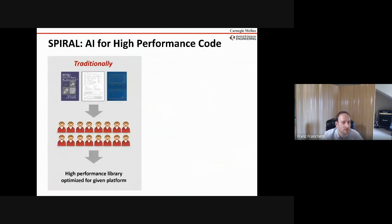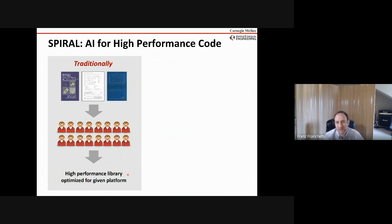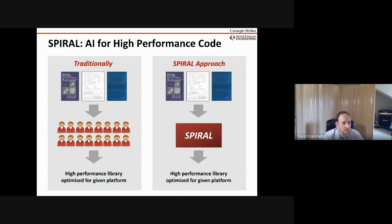Traditionally what would happen is you have a programmer who has maybe a mathematician friend or a numerical analyst friend. They go to the library, get a book on the FFT or synthetic aperture radar or AI/ML algorithms, sit down, write something, optimize it, and then a new platform shows up and they have to do it again and again. We want to automate that — think of the Spiral system going to the library, checking out the books, understanding the algorithms, which means algorithm representation and AI: not machine learning, but really deep understanding of how to represent the knowledge in the books.